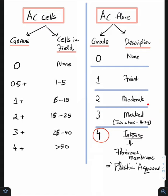2 means moderate flare where the iris and lens details are clear. 3 is going to be marked flare where iris and lens details are going to be hazy. 4 is intense flare, which means there is a fibrinous membrane, what you call as the plastic aqueous.